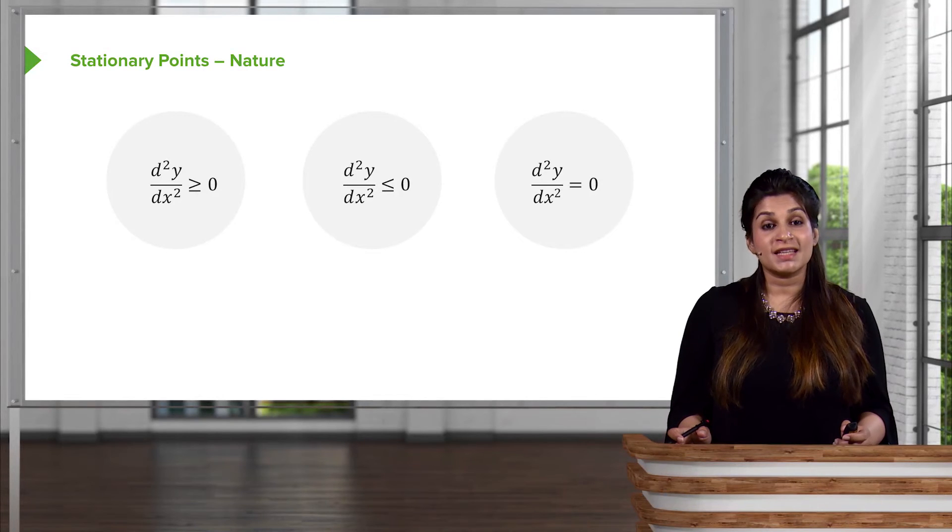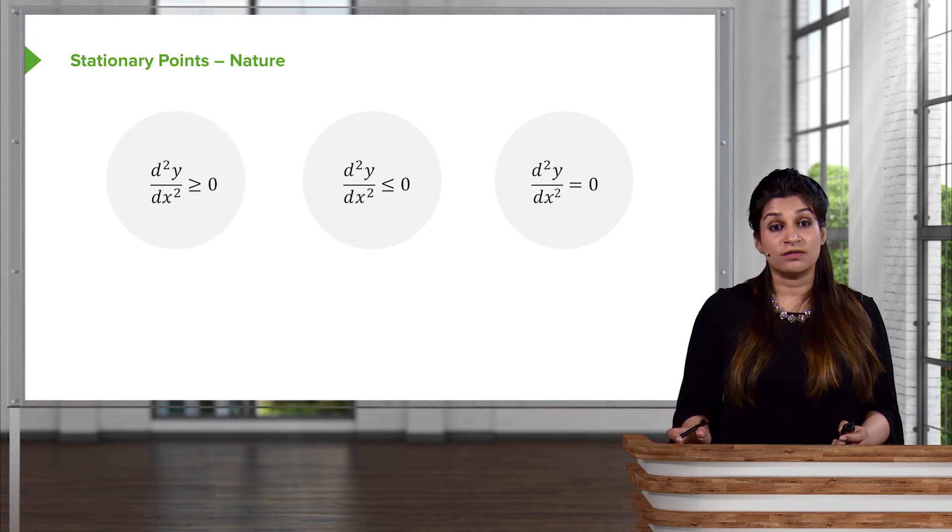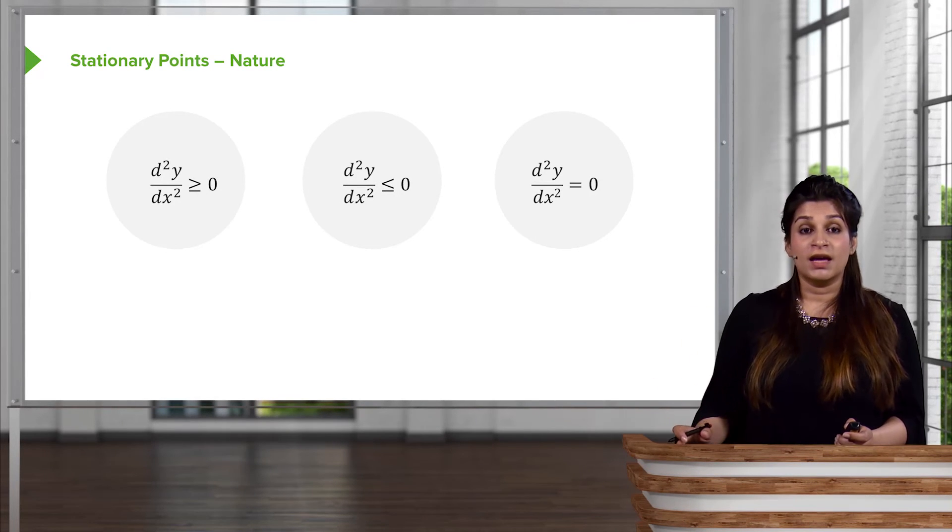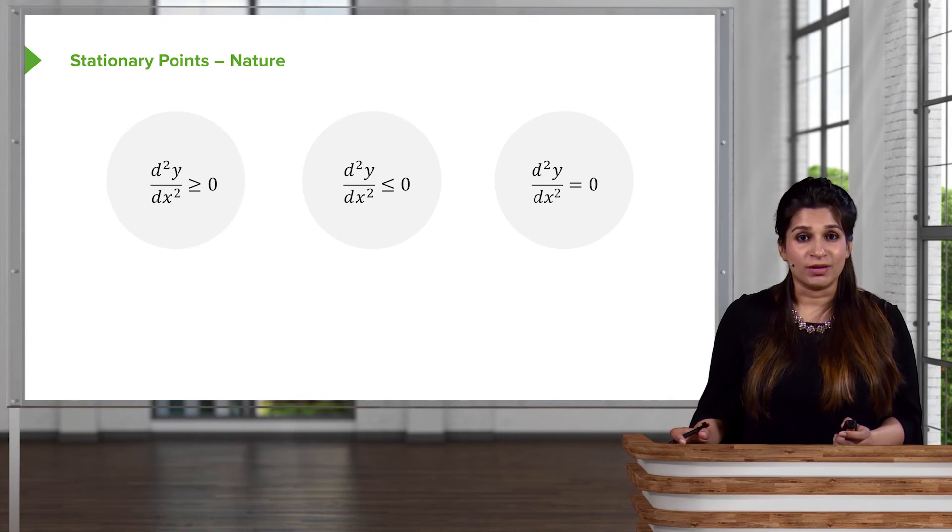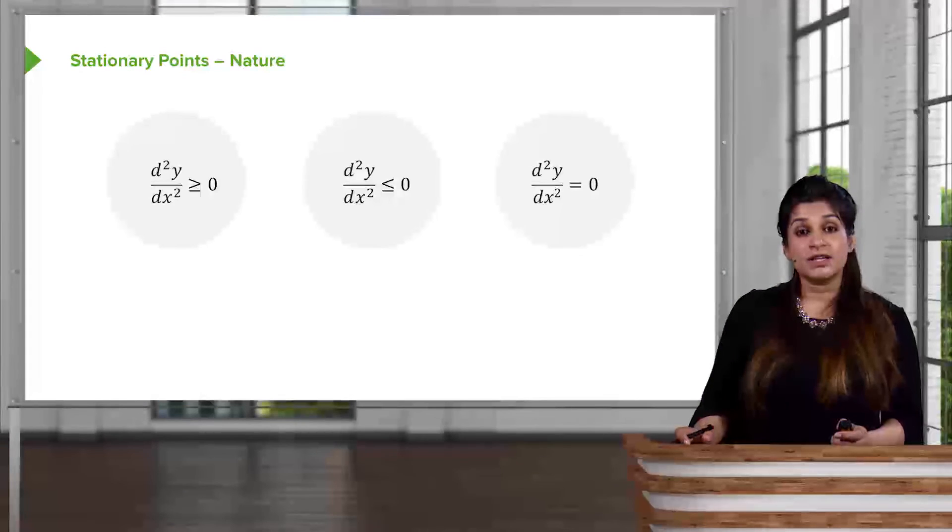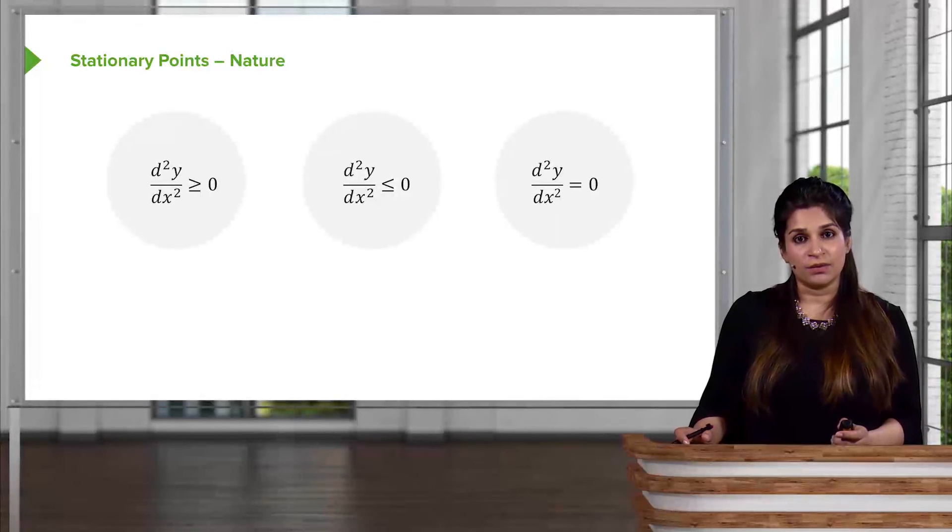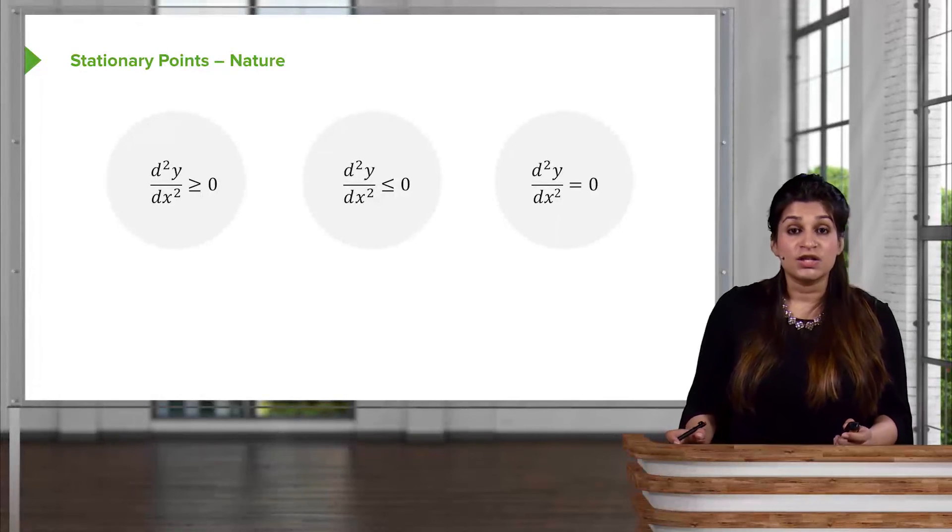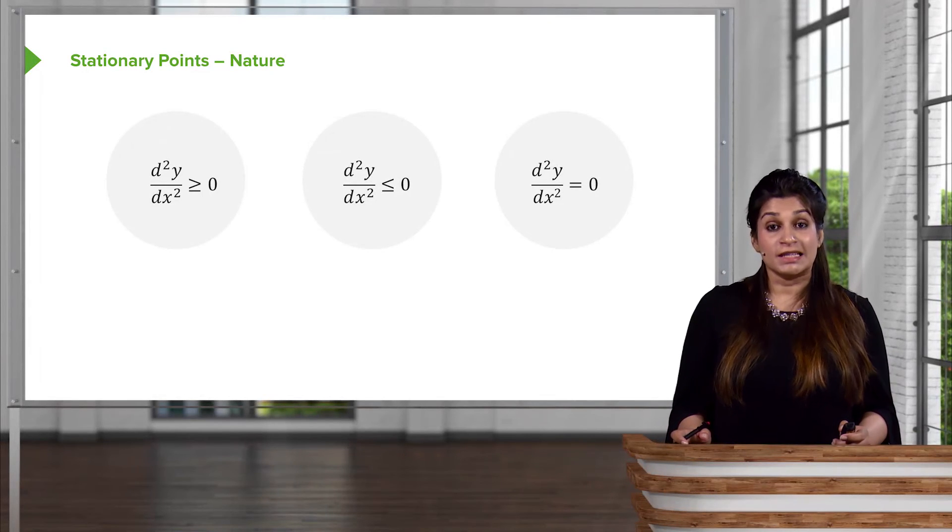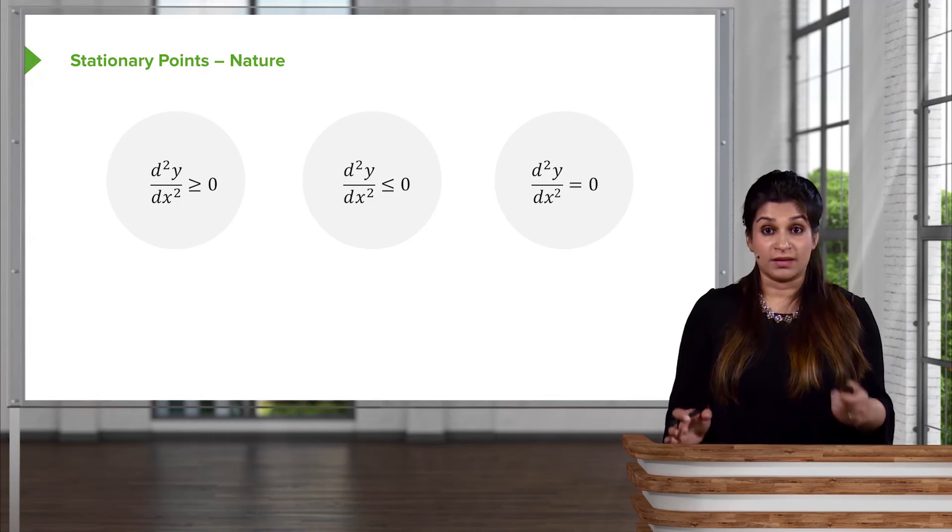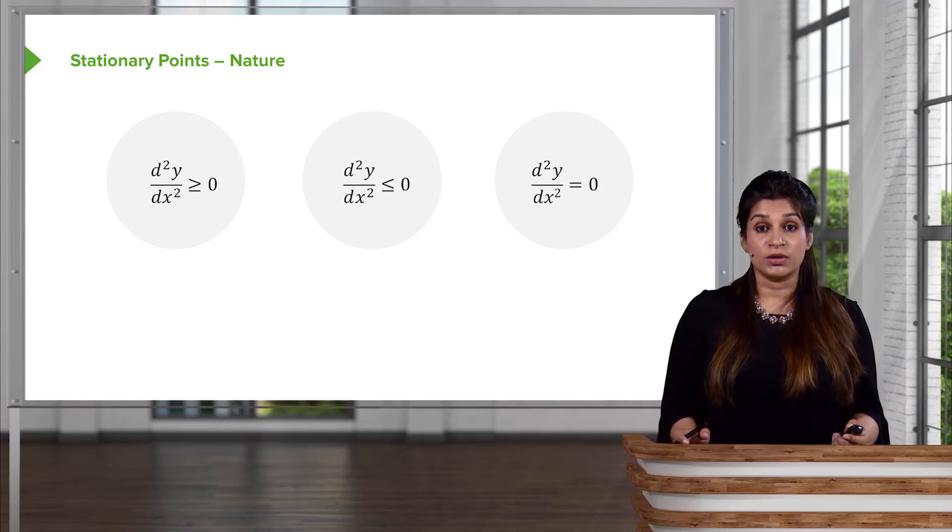Now, in order to find the second differential, we say that the derivative or the second derivative must be greater than or equal to zero. If it is greater than or equal to zero, you get a minimum point. If the second differential is less than or equal to zero, you get a negative answer. So that gives you a maximum point. And if the second differential is equal to zero, we'll deal with this shortly, but we call this a point of inflection.